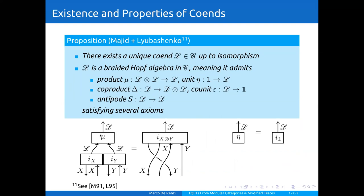It also supports a very rich structure of a braided Hopf algebra. This is maybe a second place where we see interaction between topology and algebra. In fact, this braided Hopf algebra structure on the co-end is defined by considering certain elementary diagrams and then invoking the universal property of the co-end to extract structure morphisms for this braided Hopf algebra structure.